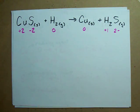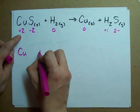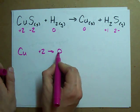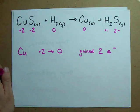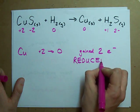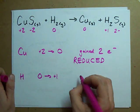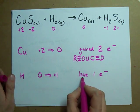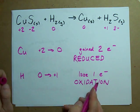So which chemicals had a change in oxidation number? Cu went from a charge of plus 2 to a charge of 0 — that's getting more negative. In order to go from plus 2 to 0, it had to gain two electrons, which means it was reduced. Hydrogen went from a charge of 0 up to a charge of plus 1 — to get more positive, it had to lose one electron, which is an oxidation. So the copper was reduced and the hydrogen was oxidized.